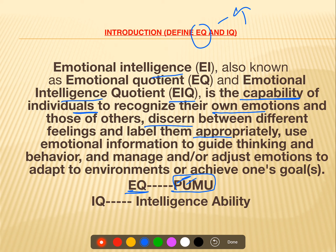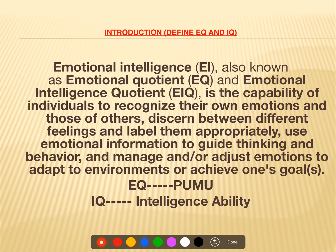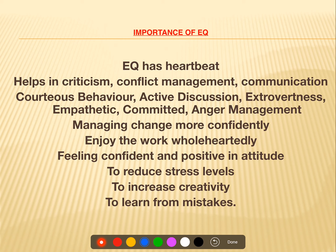First we perceive emotions, then we understand them. If you are not able to perceive the emotions of the people around you and of yourself, then you perceive them, then you understand them, manage them, and use them. PUMU — Perceive, Understand, Manage, Use — is an acronym keyword for EQ. IQ simply tells you how much intellectual ability you have, whether you are having high intellect or not.